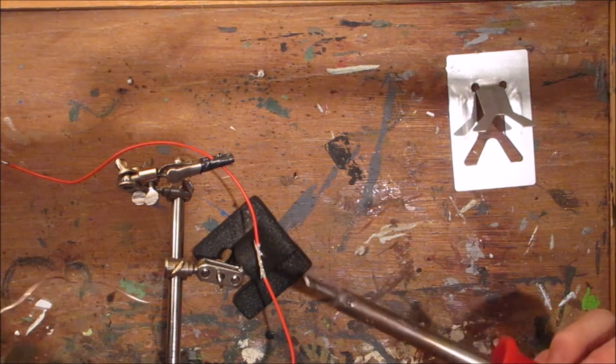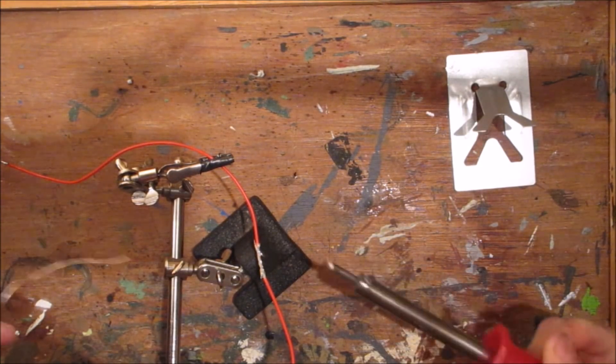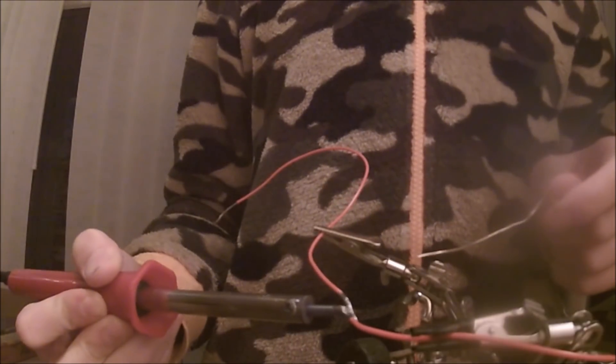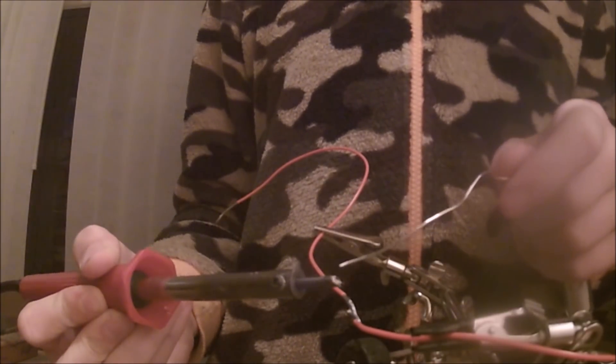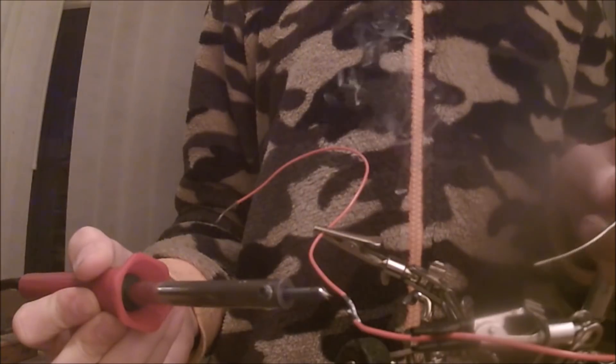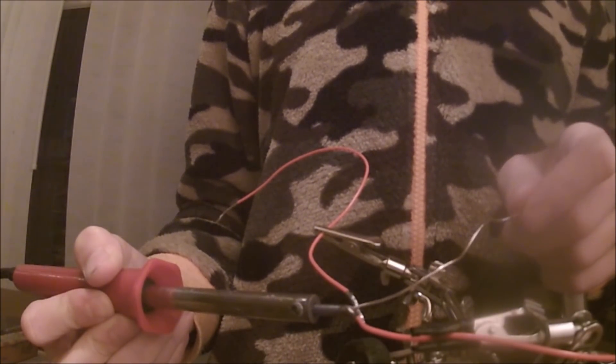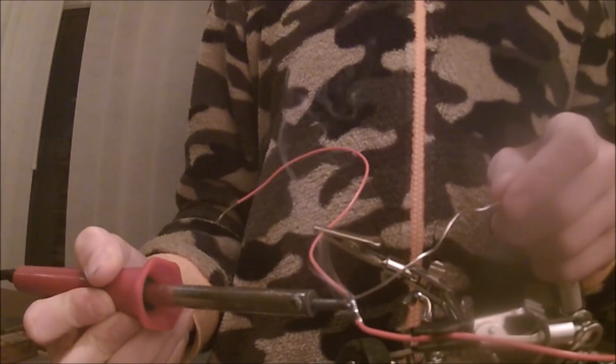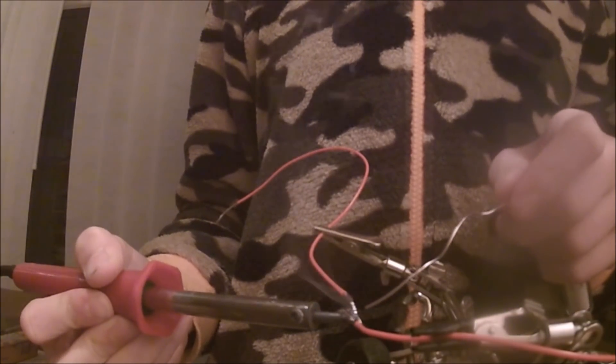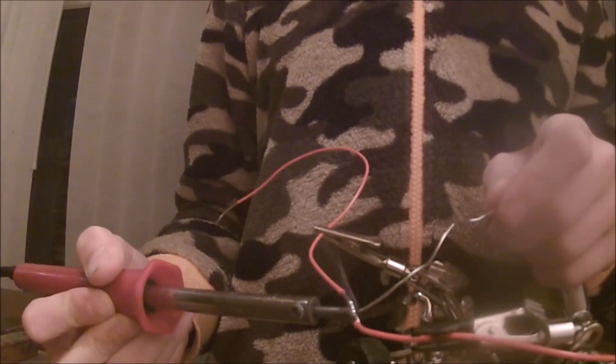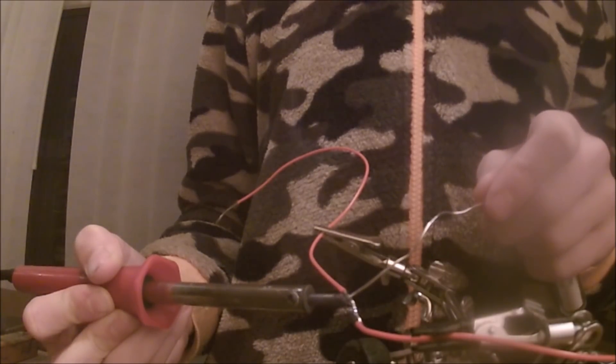And again for connecting them you're going to do the same thing as when tinning. Put the soldering iron underneath. Melt a little bit of solder onto the soldering iron tip, put it under, and then melt the solder through. Sometimes you need to put a little bit of solder on the soldering iron before to help it all melt.